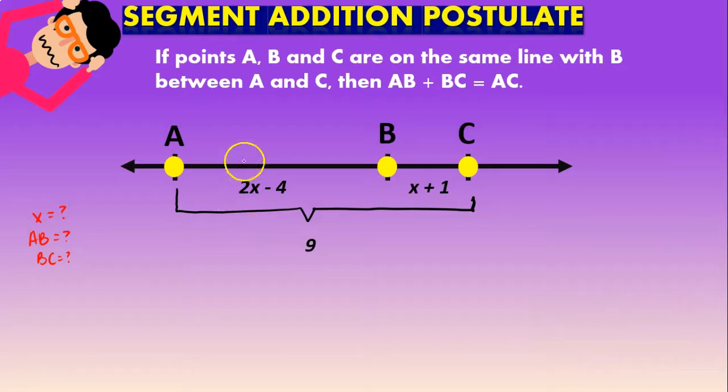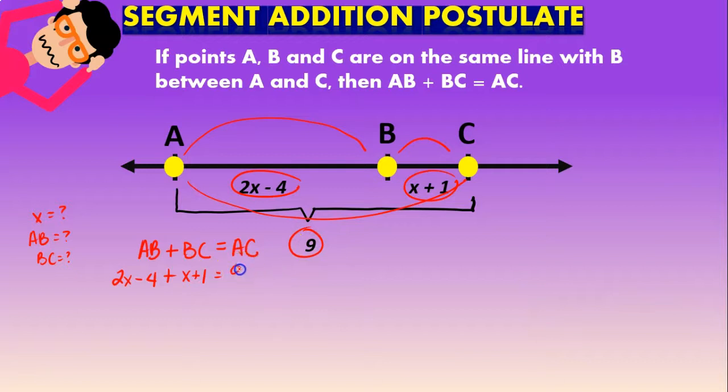Okay guys, remember because of the postulate that you can say that AB plus BC is going to be equal to AC. So AB plus BC is going to be equal to AC. Now we know that AB has a value of 2x minus 4, BC has a value of x plus 1, and AC has a value of 9.